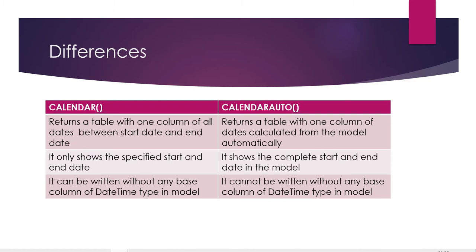January and December 31st. But this is the same as the Calendar Auto function, except that Calendar Auto automatically uses the model's start date and end date — the template is already complete. In this demo, I put a release range of 1995 to 2005.